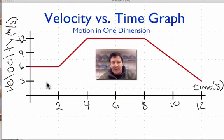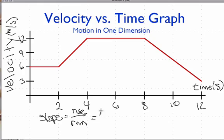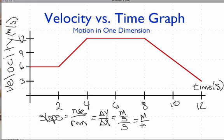Now let's look at the slope and see what information we can get from it. The slope is the rise over the run, which means the change in y over the change in x. In this case, our y-axis is velocity in meters per second, and our x-axis is time in seconds. So meters per second divided by seconds simplifies to meters per second squared — which are the units for acceleration.